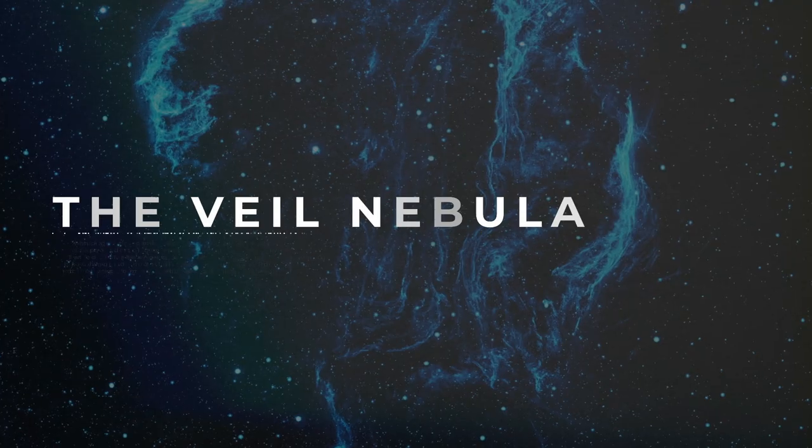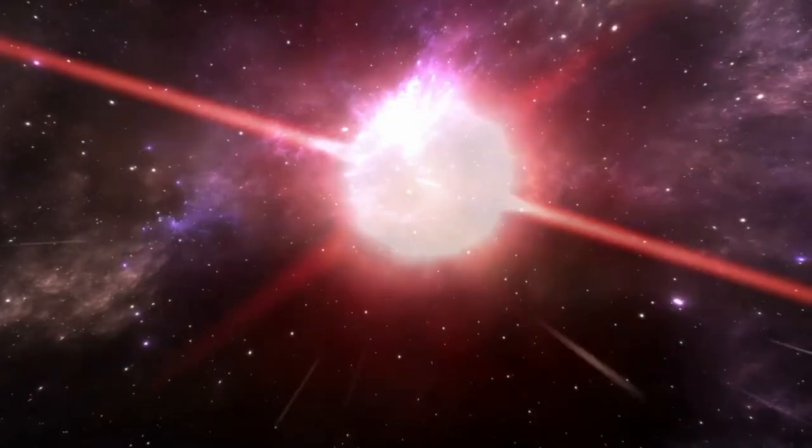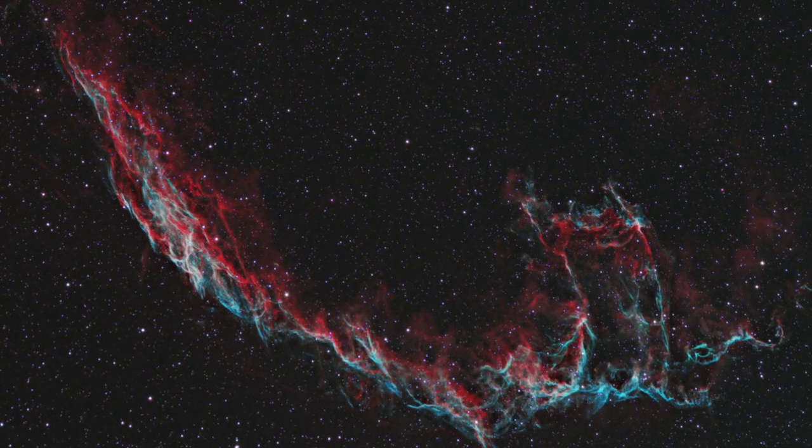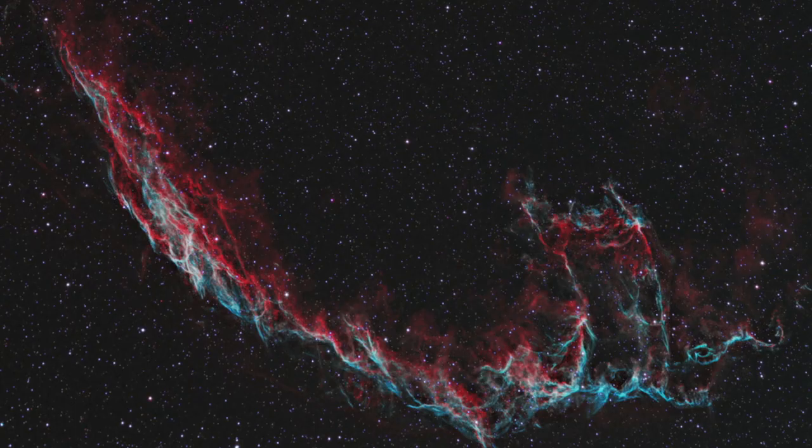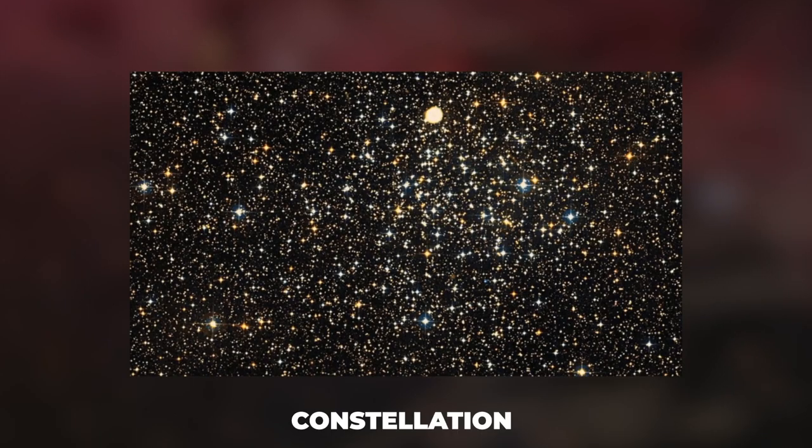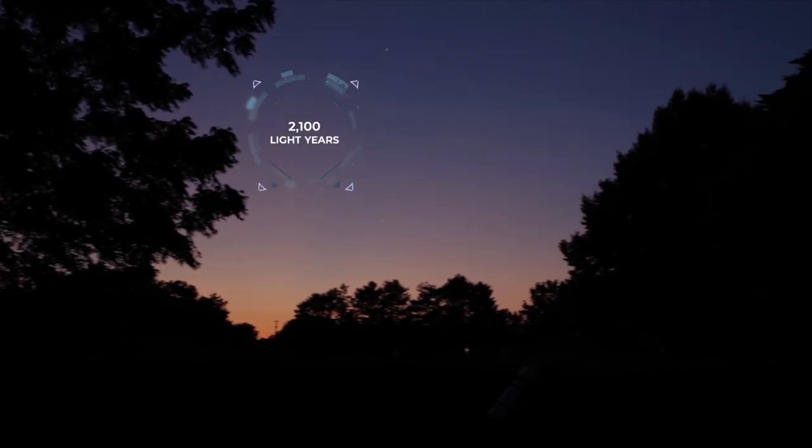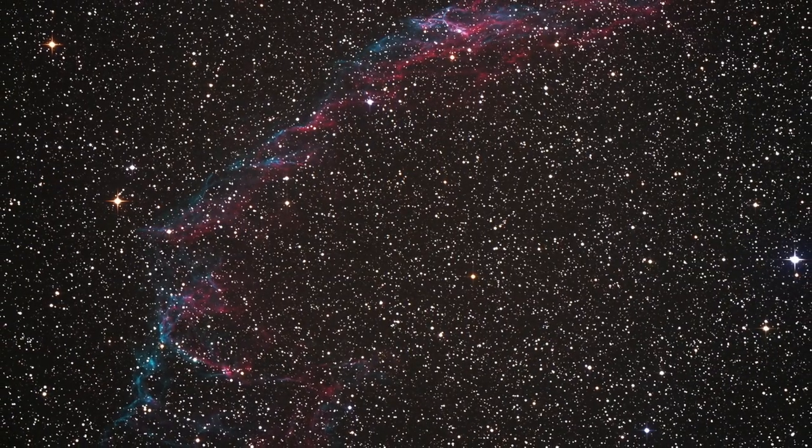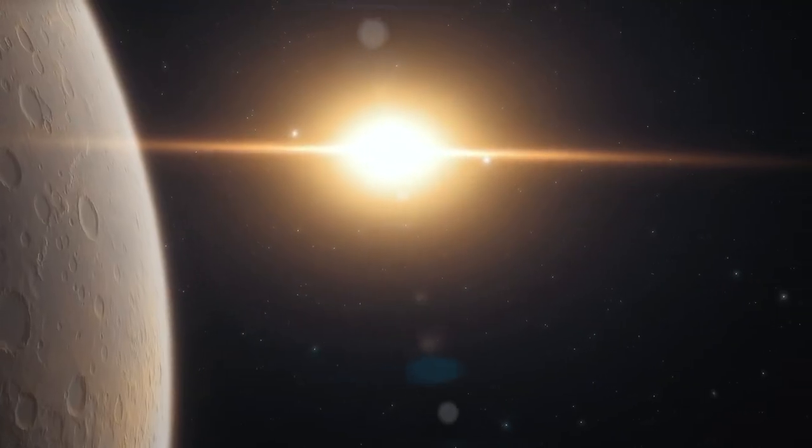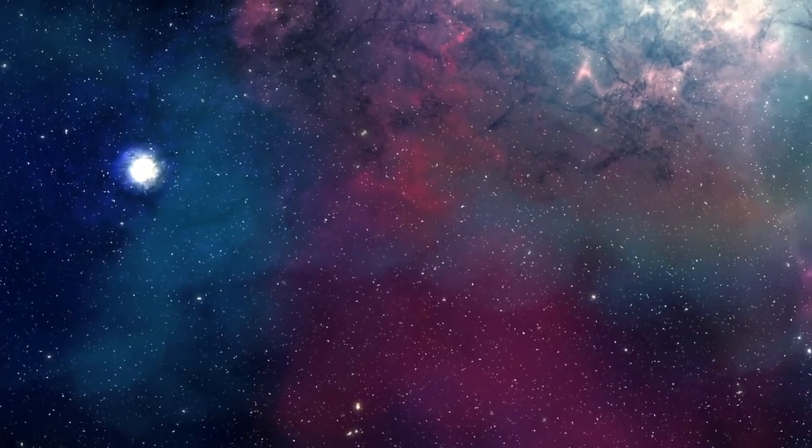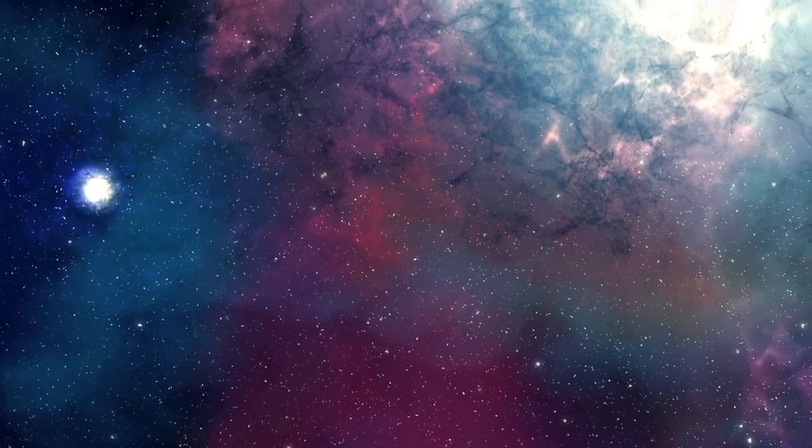Number 1. The Veil Nebula. A remnant of a recent supernova, the Veil Nebula is a massive structure of ionized gas and dust that sits inside the constellation of Cygnus only a mere 2,100 light years from Earth. The star that led to this nebula was roughly 20 times the mass of the Sun and went supernova only around 10,000 years ago.